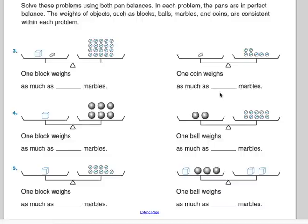Solve these problems using both pan-balances. In each problem, the pans are in perfect balance. The weights of objects, such as blocks, balls, marbles, and coins, are consistent within each problem. What that means is that a coin over on this part of the problem is the same as a coin over on this part of the problem. So we can assume that we can substitute, which is exactly what we need to do.